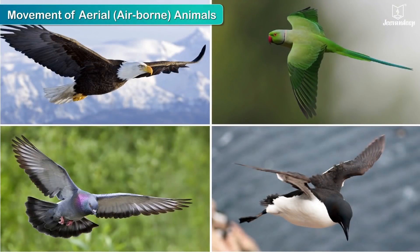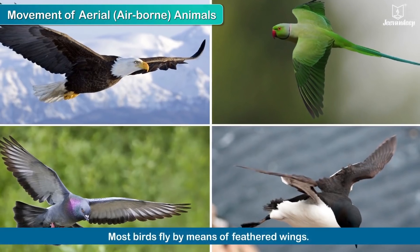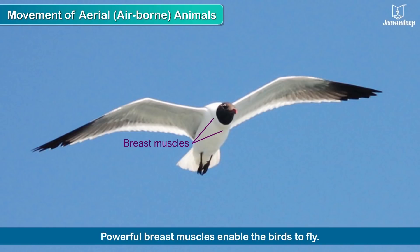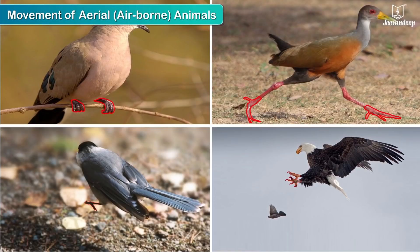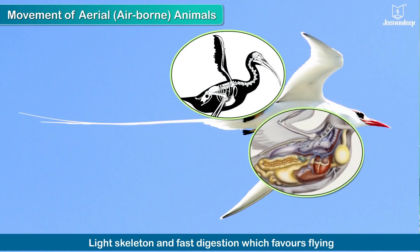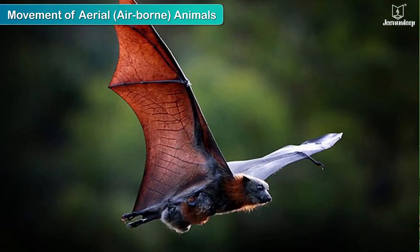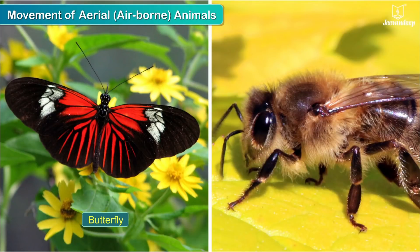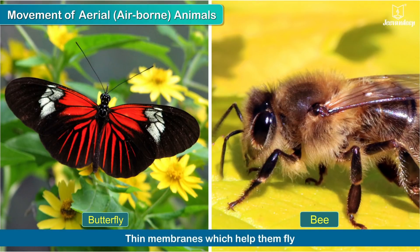Most birds fly by means of feathered wings — their forelimbs are modified into wings. They have powerful breast muscles which help them fly in air. Their hind limbs help them to perch, hop, run and catch prey. Tails also help them direct the flight. Birds have a very light skeleton and fast digestion which favors flying. Bats also fly, but their wings are actually skin folds between the forelimb bones rather than feathered wings. Insects like butterflies and bees have thin membranes which help them fly.